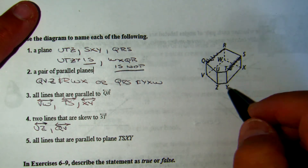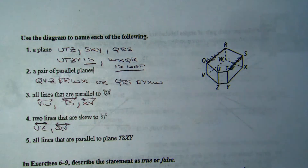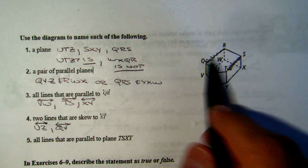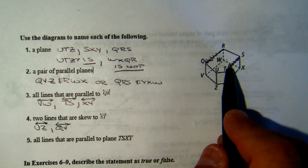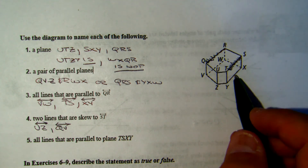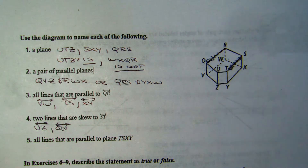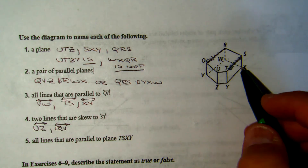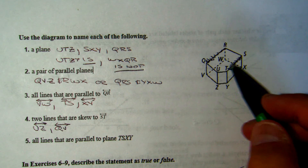All lines that are parallel to QR: here's QR. TS is parallel to it, VW is parallel to it, and XY is as well — they're all parallel to each other. I would pick the one nearest to it, in this case ST, and then get all the lines that are parallel to that.